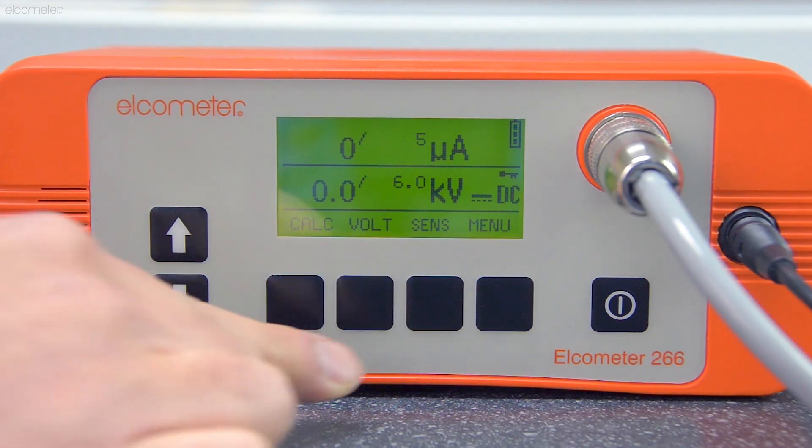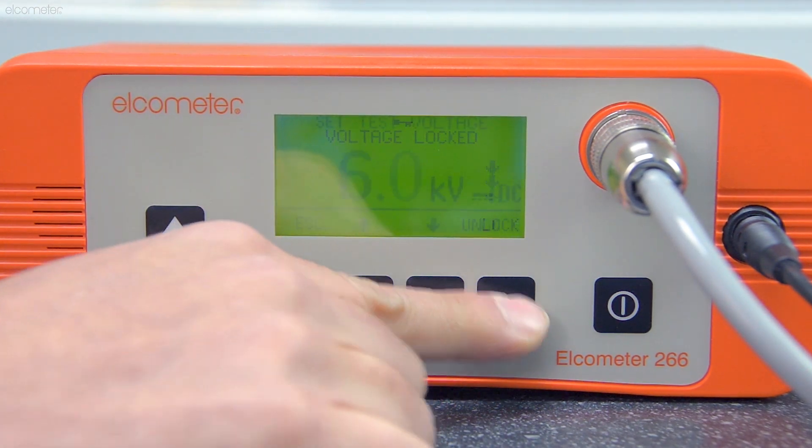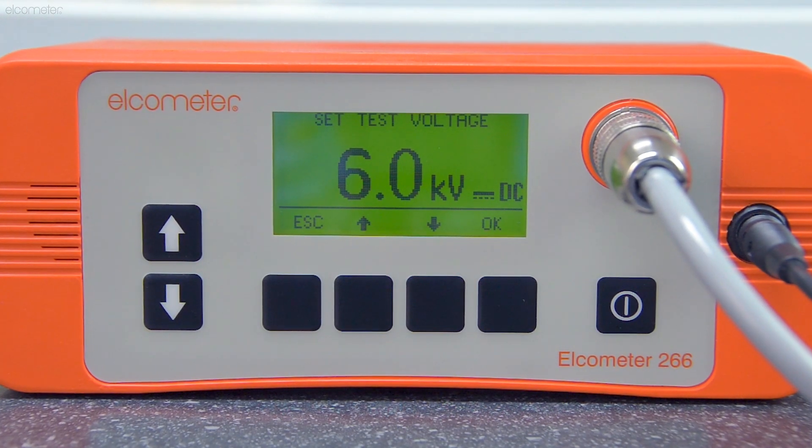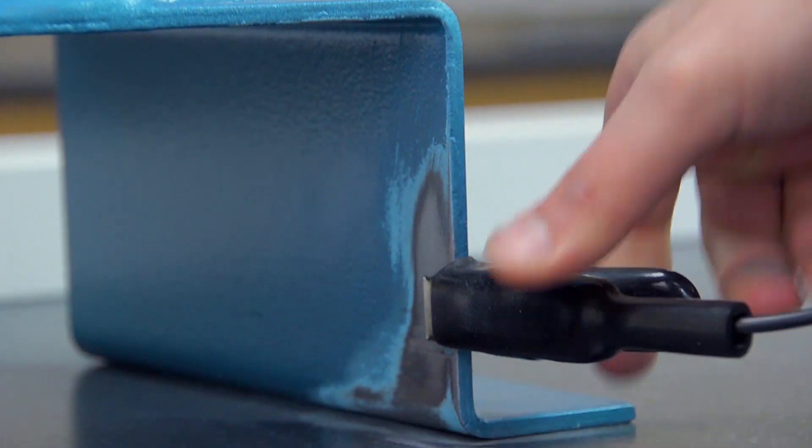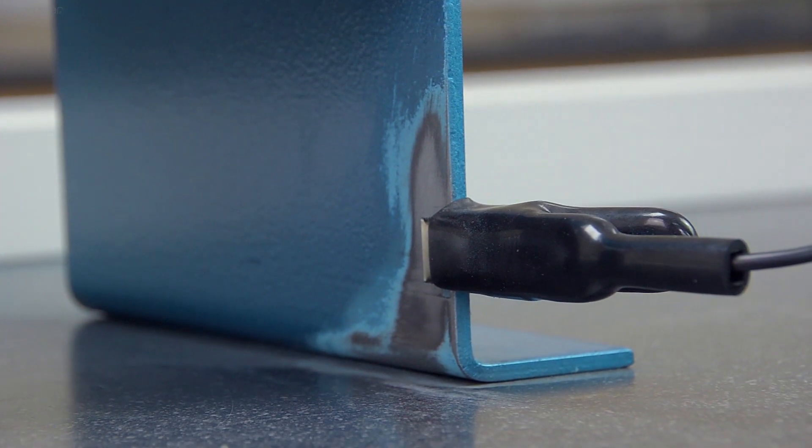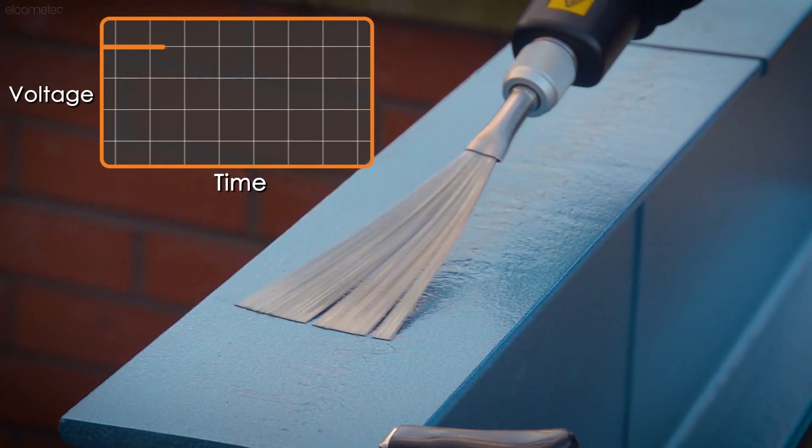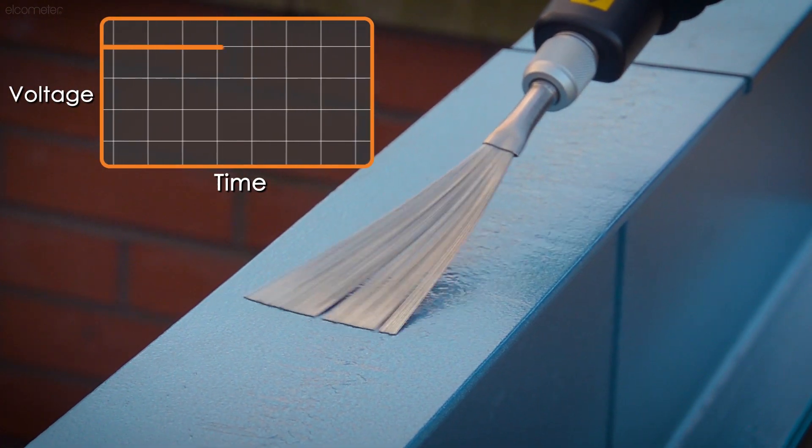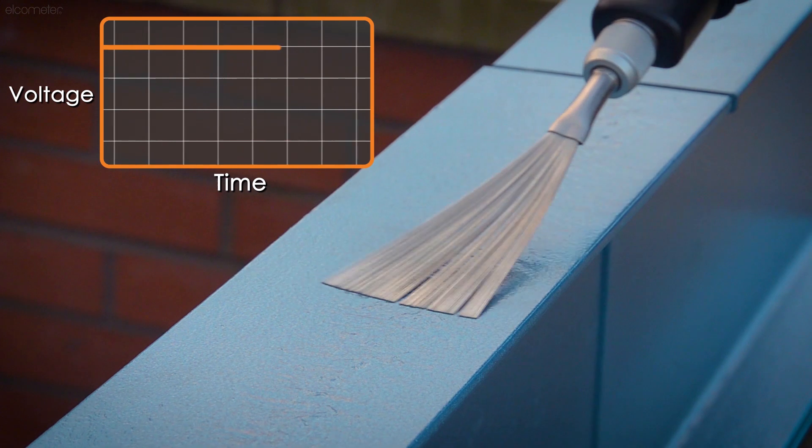Continuous DC is where you set the voltage to a constant value, usually determined by the specified coating thickness, and a signal return cable is clipped directly to an uncoated section of the substrate under test. During the test, the voltage is constantly sent to the probe, and the current at the probe is low.